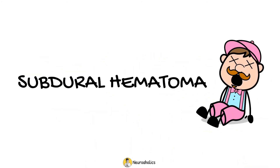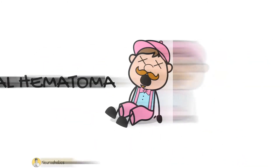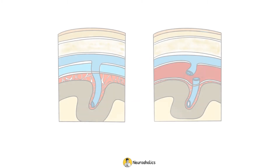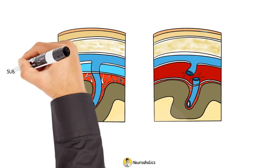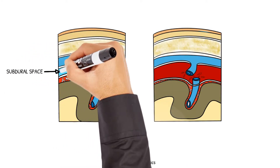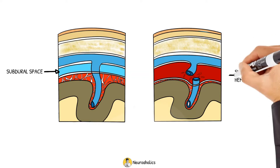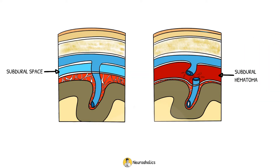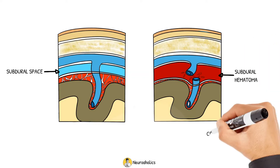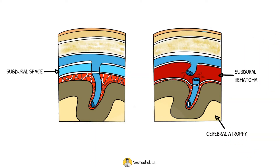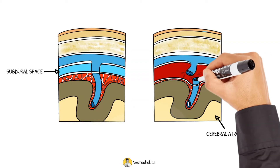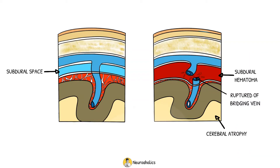A subdural hematoma is a collection of blood in the subdural space between the dura mater and the arachnoid. Subdural hematoma is more common in older patients, because cerebral atrophy stretches the cortical veins bridging the subdural space, rendering them more susceptible to laceration from shearing injury or spontaneous rupture.